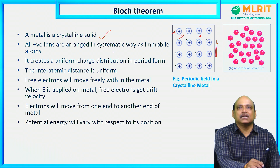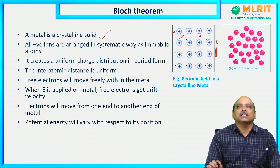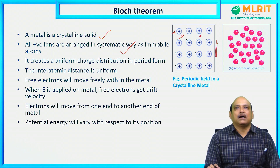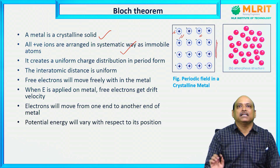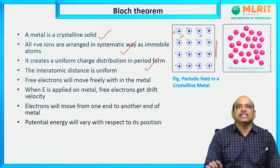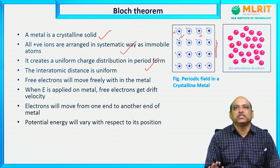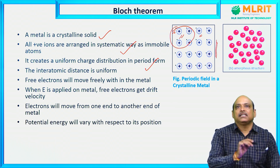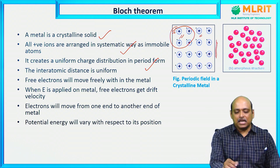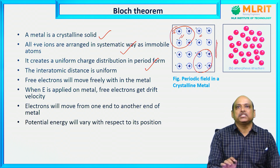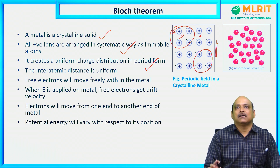Let us assume that one electron is at one corner of the metal. In a metal, ions are arranged in a systematic manner — that is why it is called a crystalline solid. Because they are arranged systematically, a uniform charge distribution can be expected. Whatever charge is distributed by these positive ions in one region can be expected in some other region of the same metal.